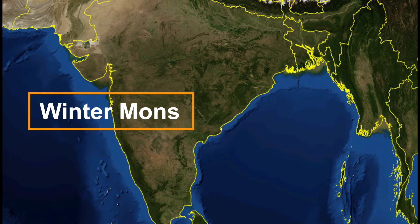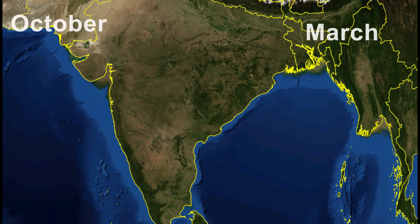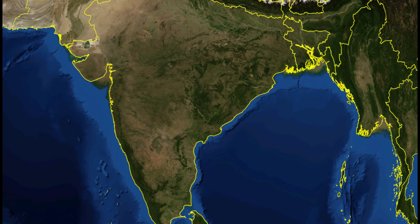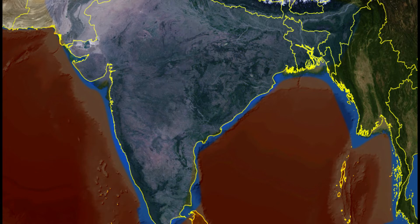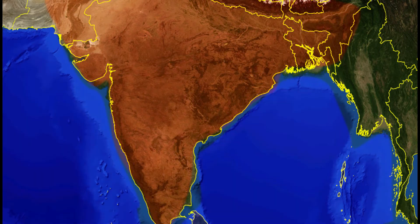The second type of monsoon is winter monsoon, which starts from October and ends in March. This is when the winds blow from land towards the sea, because during winter, land cools faster than the ocean. So high pressure forms over land and we already know that winds blow from high pressure to low pressure. This also explains why we receive heavy rain in summer — the winds flowing from the ocean carry moisture, which causes rainfall.